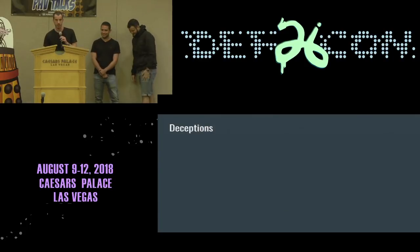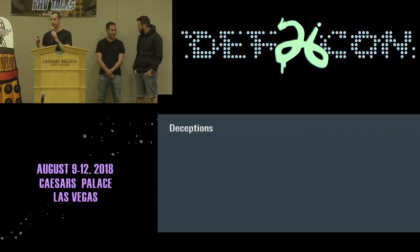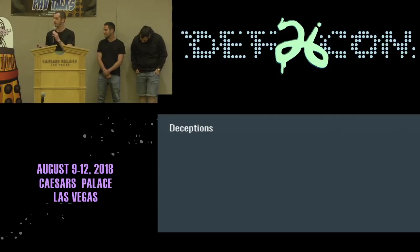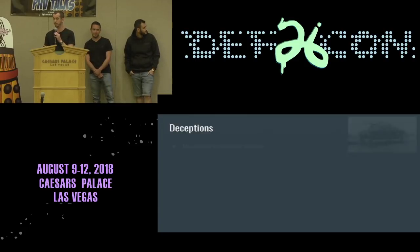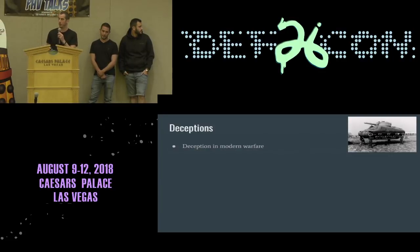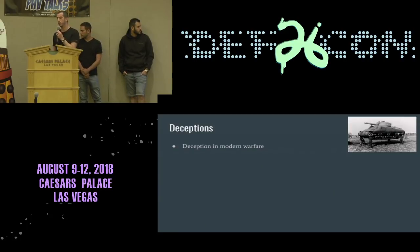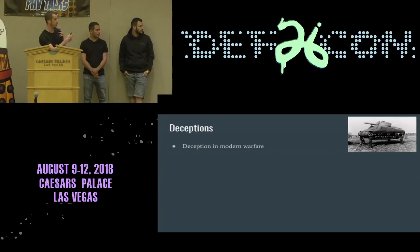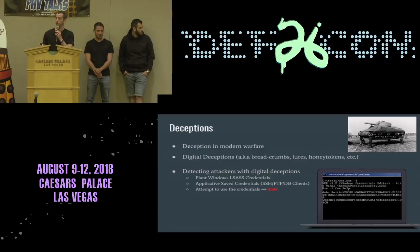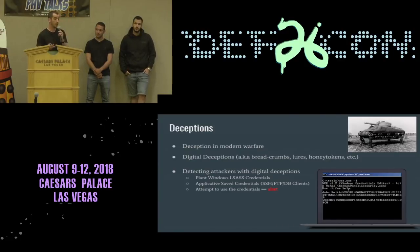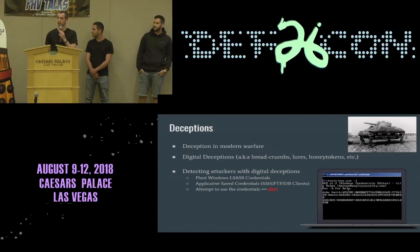So we'll pause for a second on OSINT and cover deceptions. Deceptions are basically pieces of information planted by defenders in order to make attackers make mistakes. One example from real life was in the Second World War, where the Allied forces used dummy tanks and other means to fool the German forces. What you see in the picture is an inflatable tank that six people can lift. The idea was to make the Germans believe they were going to attack from a certain location.